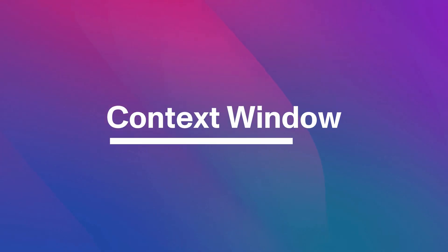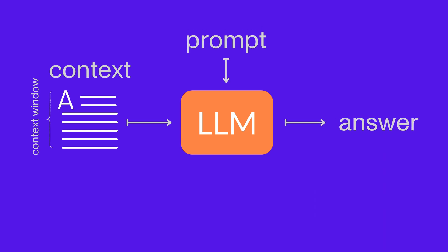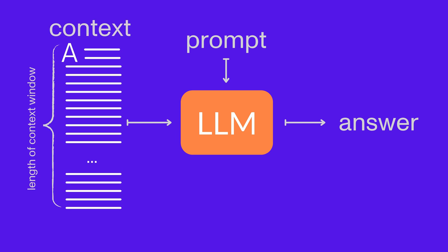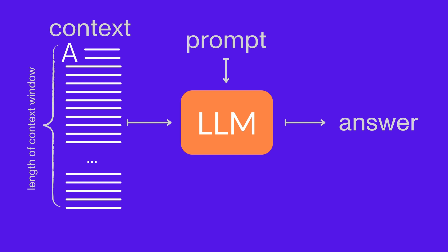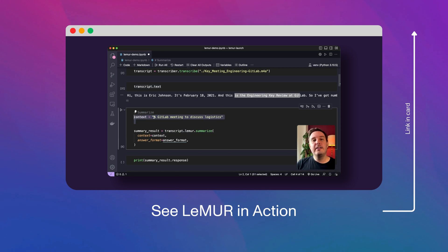A context window refers to the contextual information that the model uses to understand and generate coherent language. The context window of a model plays a significant role in shaping the contextual awareness, contributing to its overall performance in tasks like text completion, summarization, and content generation. Larger context windows enable models to have a broader understanding of the context but cause computational challenges. AssemblyAI's Lemur can handle up to 10 hours worth of audio as context. You can watch this video to learn more about Lemur or go to the playground to try it out.